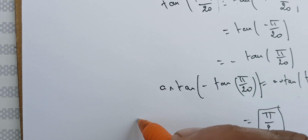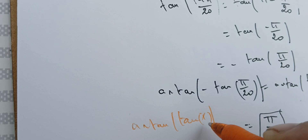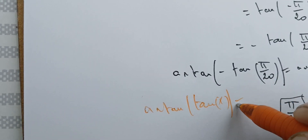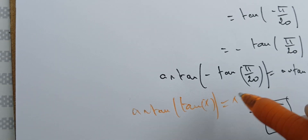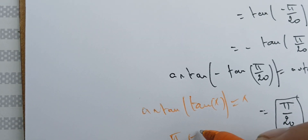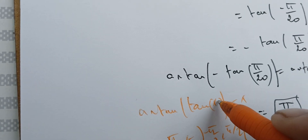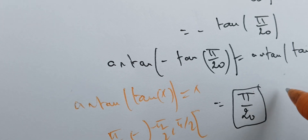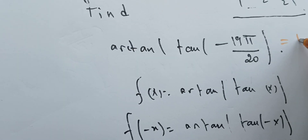Recall that arctangent of tangent of x, when x is in (-π/2, π/2), equals x. Here, π/20 is in (-π/2, π/2), and therefore arctangent of tangent of π/20 equals π/20. So the value we need is π/20.